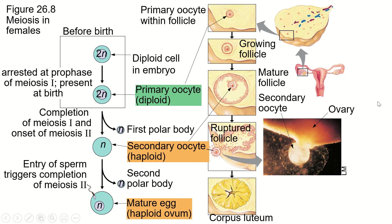And then we get to the human female. With females of many animal species — and this is the same process in all mammals, not necessarily all animals, but all mammals — the egg is going to provide most of the nutrition to the developing embryo. And so the egg needs to be a much bigger cell than the sperm.